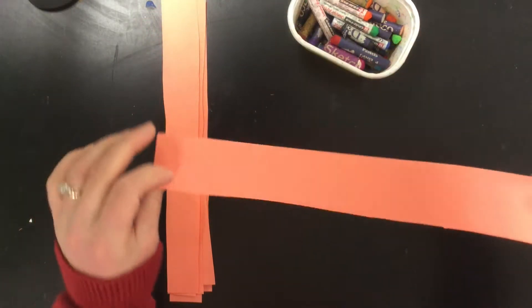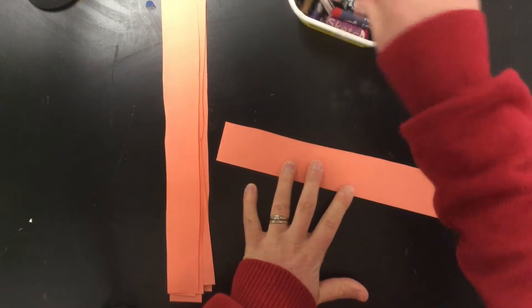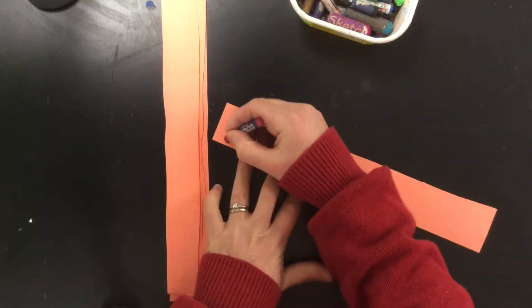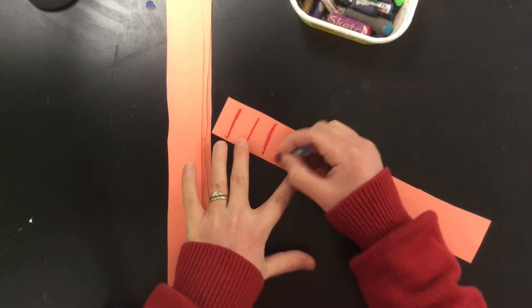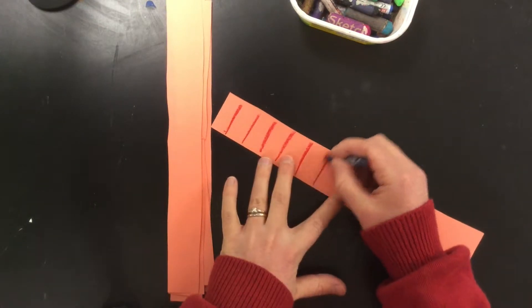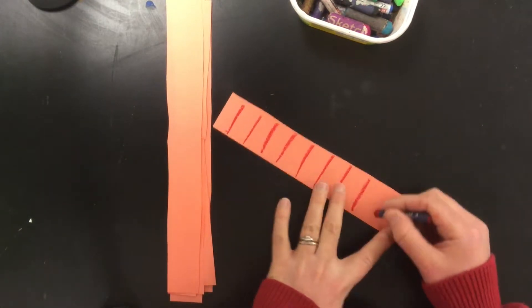Now we're going to use the oil pastels to draw a pattern on both sides of each strip. I want you to draw a different pattern on each strip. So you can do the same pattern on the front and back but it has to be different on every strip.